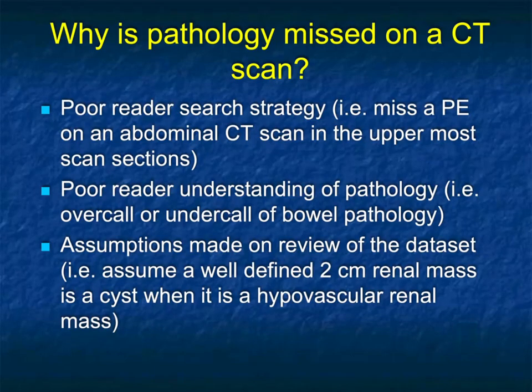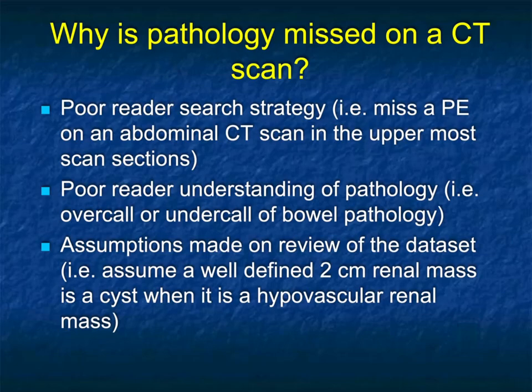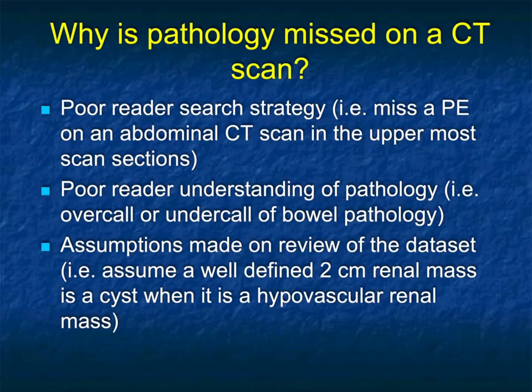Let's look at some examples. Generically, why do people miss things on CT? There are a lot of reasons. One is poor search strategy — you're doing an abdominal CT and you're not worrying about a PE, or you're doing a chest CT and not looking at the lower scans that go through the abdomen. Sometimes it's just poor understanding of pathology. When you're looking at bowel and it's not well distended, is that abnormal or just not well distended? Is the stomach normal, but there's no water or positive contrast, or are there thick folds? Just saying 'I don't know' is not an answer either.